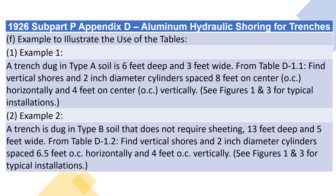F. Example to illustrate the use of the tables. Example 1: A trench dug in type A soil is 6 feet deep and 3 feet wide. From Table D1.1, find vertical shores and 2-inch diameter cylinders spaced 8 feet on center horizontally and 4 feet on center vertically. See figures 1 and 3 for typical installations.